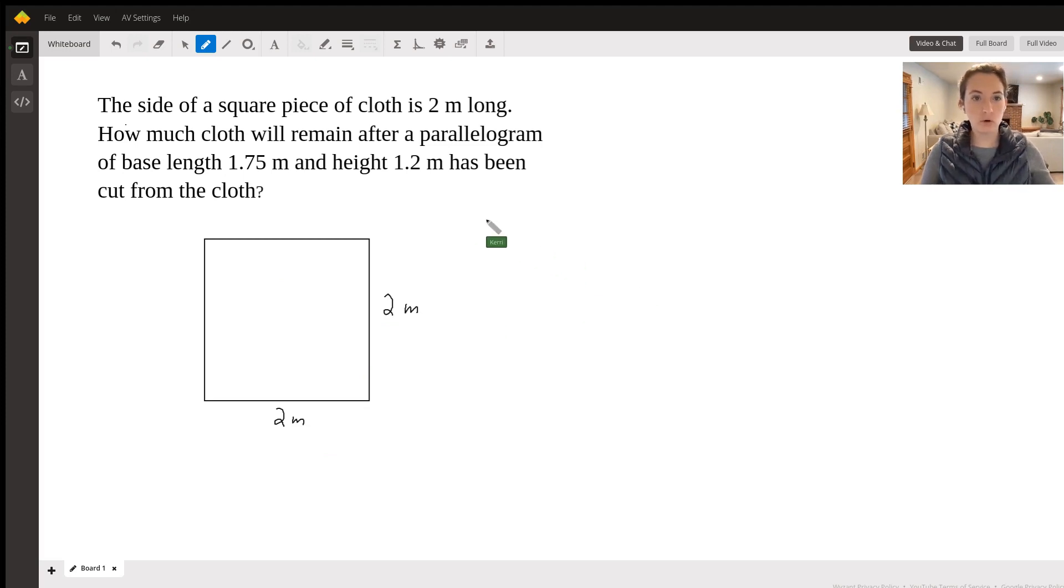For any square or rectangle, we know that the area for a square is basically going to be the side length squared, or it follows that formula of base times height, just like a rectangle would.